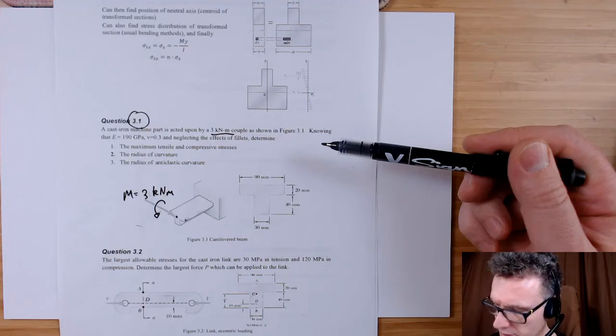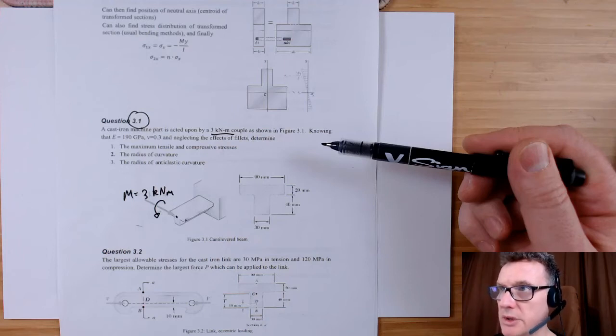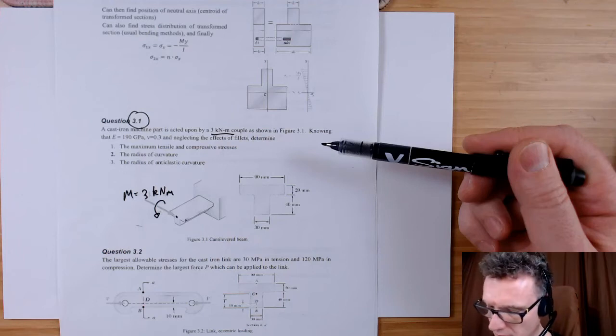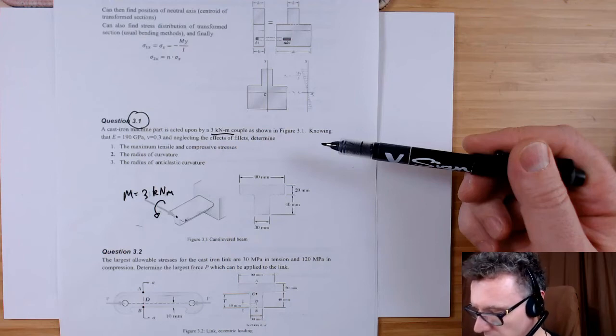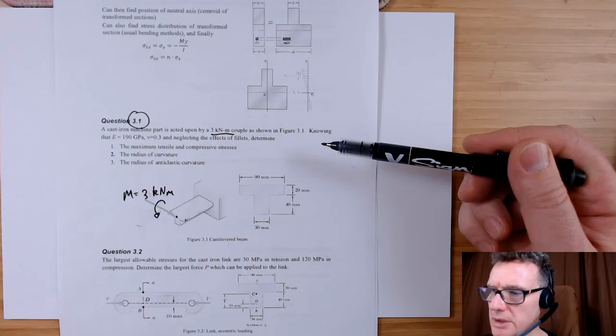And then for the bottom, which is going to be in compression, so we want to use the bottom distance. Same turning moment, 3,000, that's 38 times 10 to the minus 3, 868 times 10 to the minus 9. Put those numbers in the calculator and you're going to get minus 131.3 megapascals. Okay, so that's done the compressive and the tensile stresses.